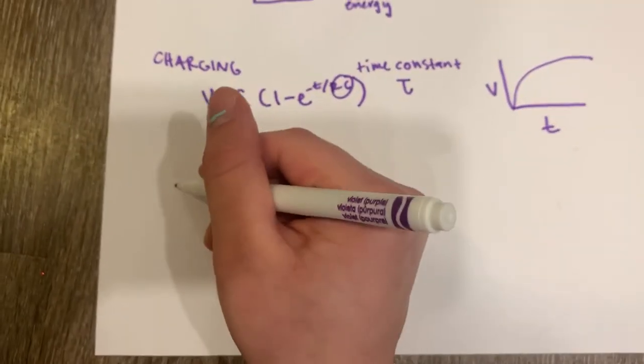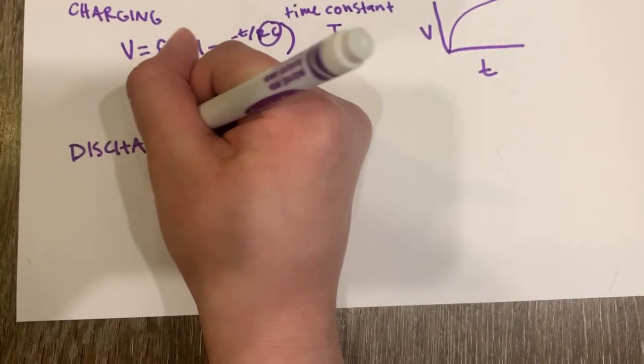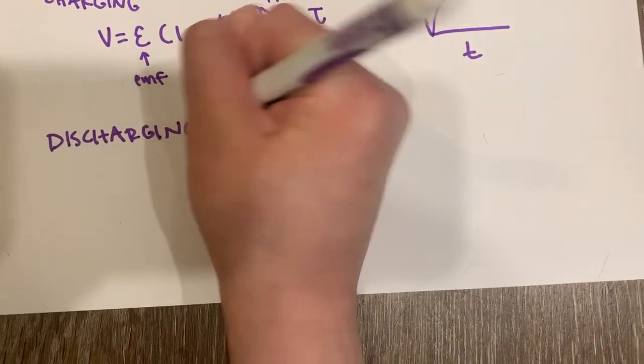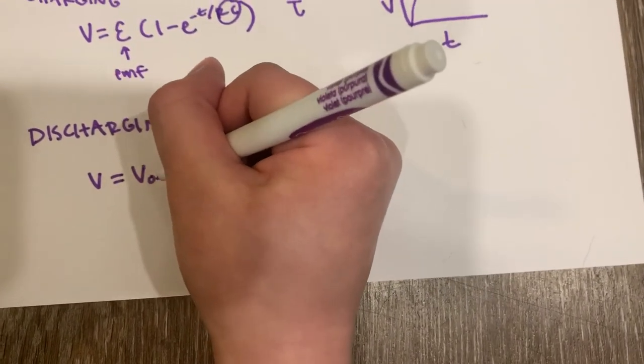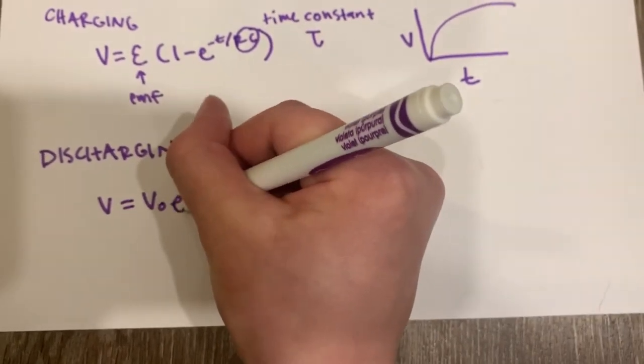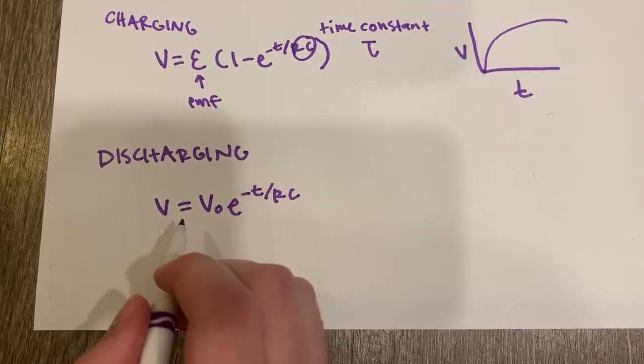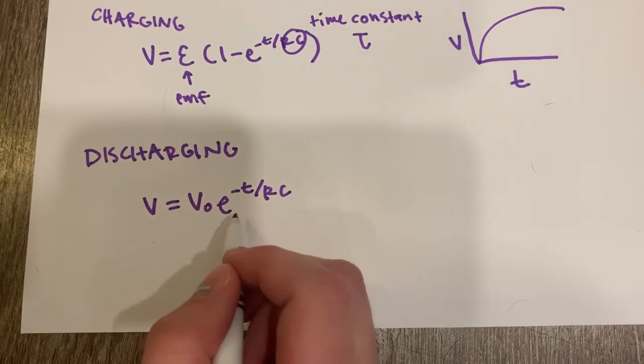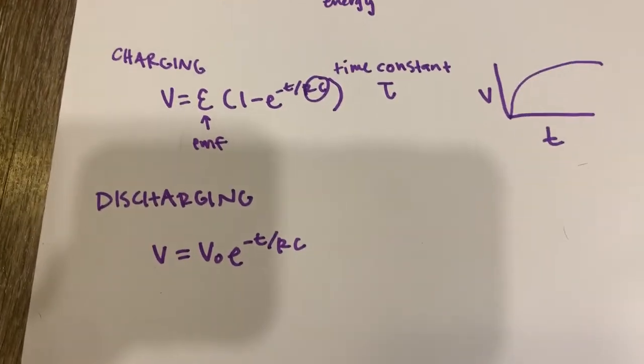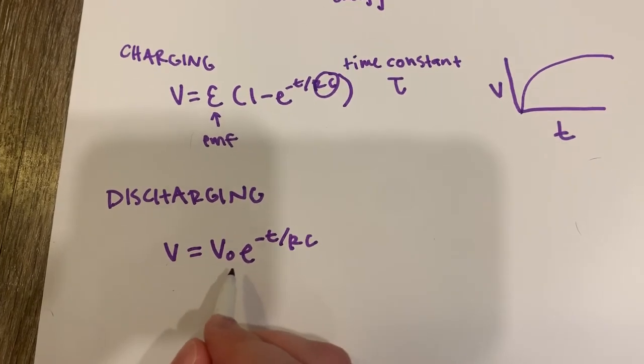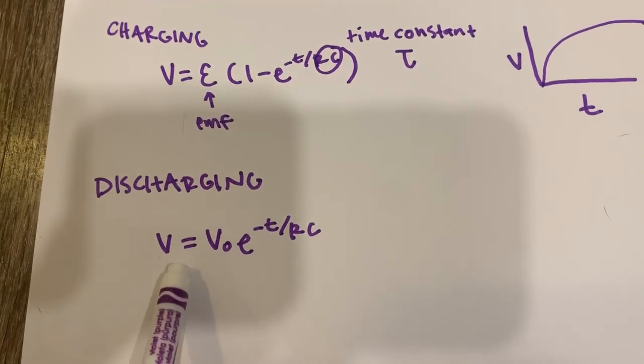Now let's talk about discharging a capacitor. Discharging. Okay, so this is voltage equals the initial voltage times E to the negative T over our time constant again. And these two voltages differ because this initial voltage is going to be the initial voltage that is applied to the capacitor. And then this is the voltage that we want to end up at.